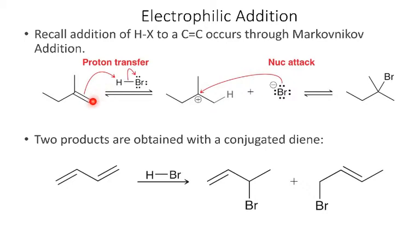The hydrogen adds to the less substituted carbon, so the carbocation ends up on the more substituted position. Then in the second step, the nucleophilic attack — the bromine comes in and adds where the carbocation is, and that's why we get the more substituted product.